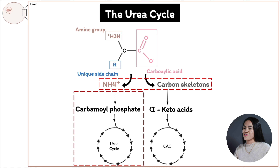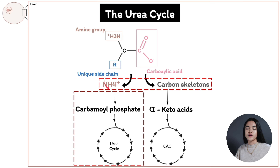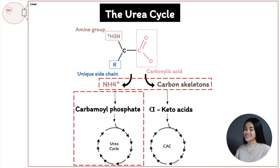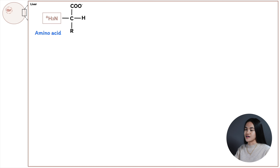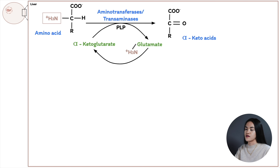If you've seen the lecture on amino acid metabolism, we covered how an amino acid is broken down — how the amino group is removed and separated from the carbon skeletons. As a quick recap: in the cytosol of hepatocytes, amino acids transfer their amino group to alpha-ketoglutarate to form glutamate, and that amino acid becomes an alpha-keto acid.